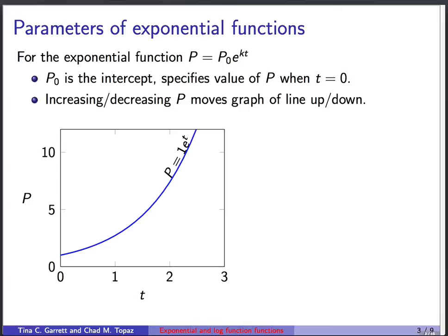So parameters of exponential functions. For the exponential function p = p₀e^(kt), p₀ is the vertical intercept. It says when t equals 0, what's the value of the function? Also, increasing or decreasing the value of p shifts that intercept, so it basically moves the graph - I should say it's not really a line - the graph of the curve up or down. Let's see a couple examples of that.